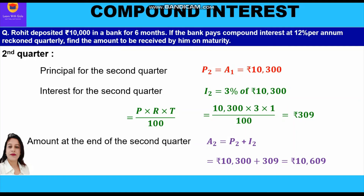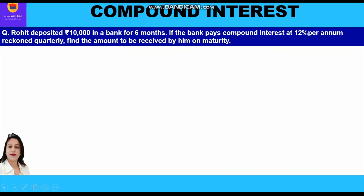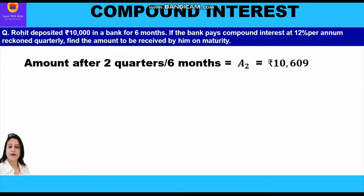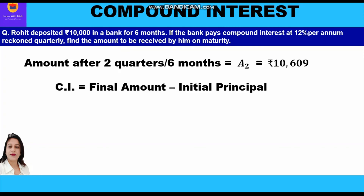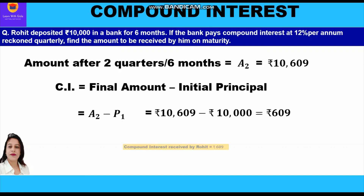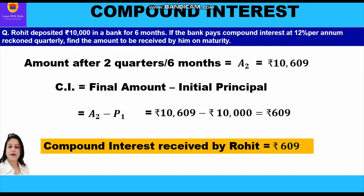The amount Rohit received on maturity from the bank is rupees 10,609. The compound interest is the difference between the final amount and the initial principal he deposited. So we subtract 10,000 from 10,609 and get rupees 609 as the compound interest received by Rohit.